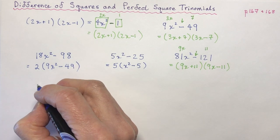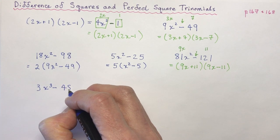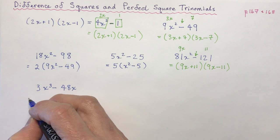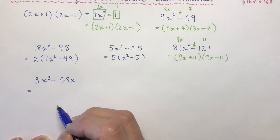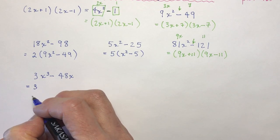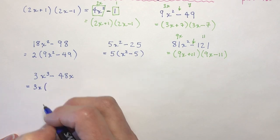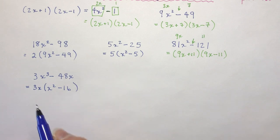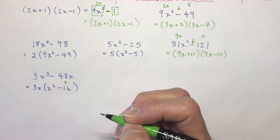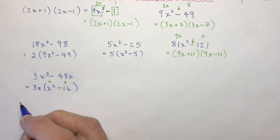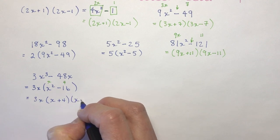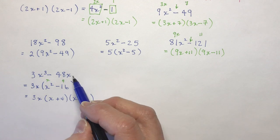Let's try a more complicated one: 3x cubed minus 48x. When you look at that you don't see any perfect squares — in fact there's a cube, a power of 3. But the greatest common factor is 3x. Taking that out leaves x squared minus 16. Now, is this a difference of squares? Yes! The square root of 16 is 4, the square root of x squared is x. So I write 3x times x plus 4 times x minus 4 — and there is your complete factoring.